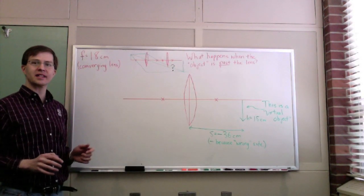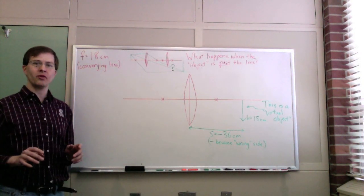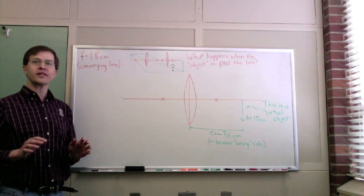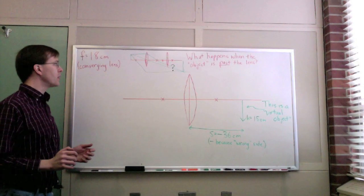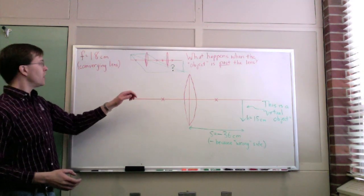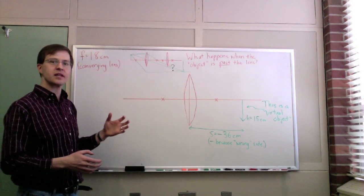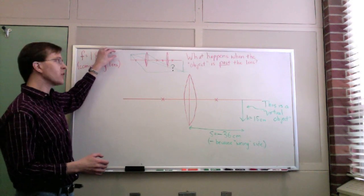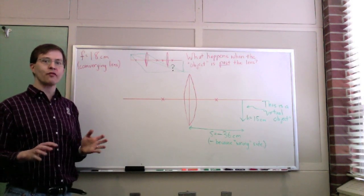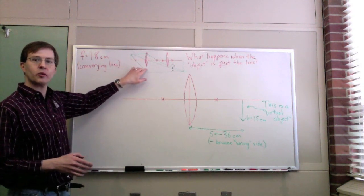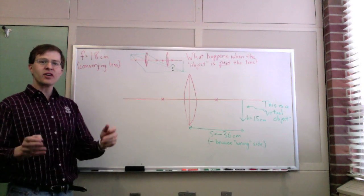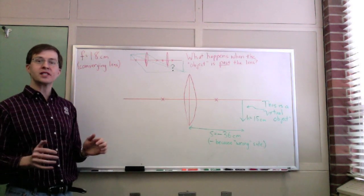I want to do one more lens ray tracing example from Geometric Optics — a weird example that most introductory physics classes don't ever get to, but it comes up in realistic situations. Imagine you're building a set of lenses all in a row — some optical device with multiple lenses. You've got a first lens and a second lens separated by some distance, and you put an object before the first lens. The usual procedure for multiple lenses is well-defined: first pretend the first lens is the only one, find where its image is, then use that image as the object for the next lens.